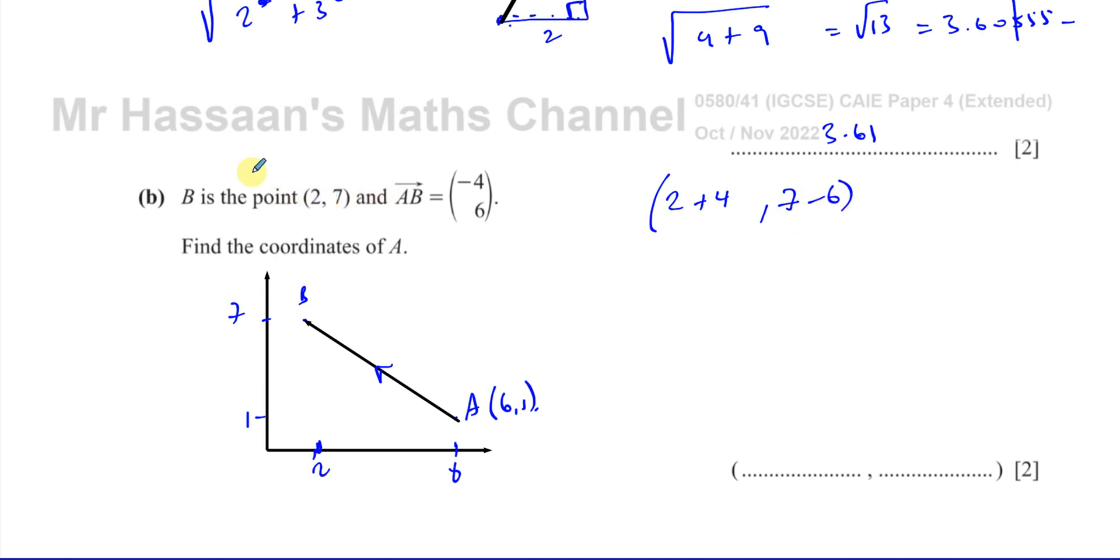How would you do this without doing a visual representation? You basically just work backwards. You take the point 2 and you think, how did I end up at 2 if I had to go 4 backwards? So you have to just basically do the opposite. So you add 4 to 2. And for the same thing for this, you do the opposite operation. So this is 7. How did we end up at 7 if we went 6 upwards? That means you have to take away 6. So you end up with 6 and 1.